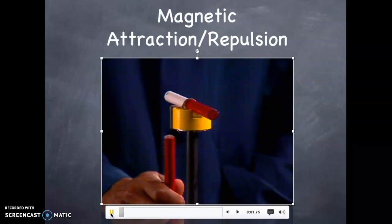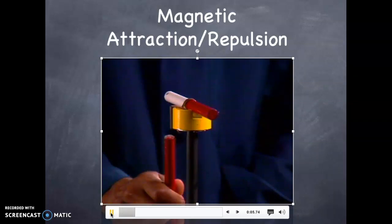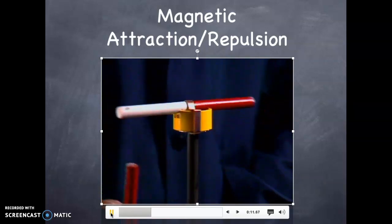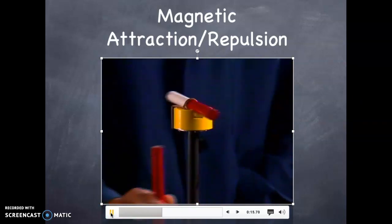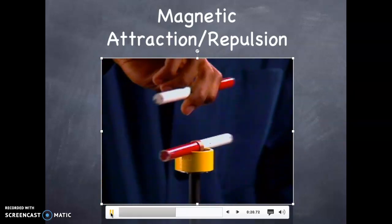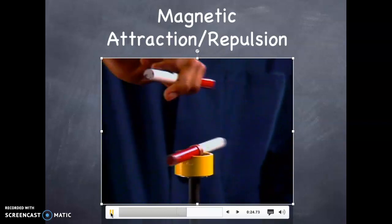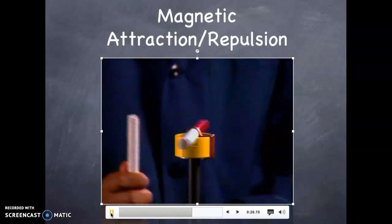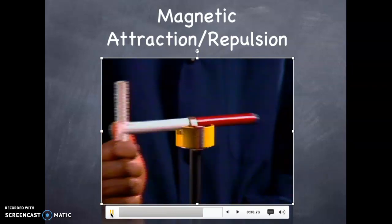These two bar magnets will be used to show magnetic attraction and repulsion. One of the magnets is placed on a bearing stand and the other brought nearby. First, with unlike poles together, the magnets are attracted to one another. Now, with like poles together, this time the magnets repel one another.